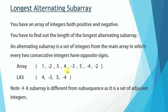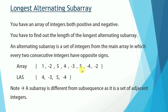You can see the main array is filled with both positive and negative integers, and the LAS — the longest alternating subarray — totally aligns with that definition: every two consecutive integers have opposite signs. Note that a subarray is different from a subsequence; a subarray is a set of adjacent integers from the main array, so all integers of the subarray are consecutive.